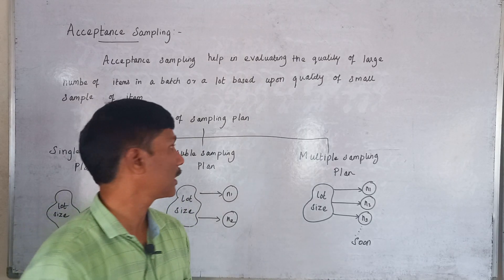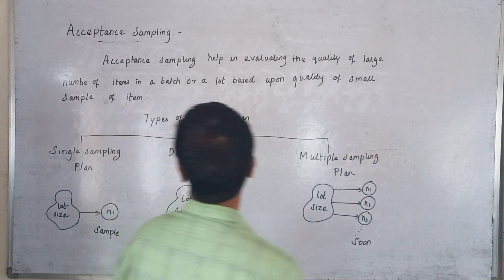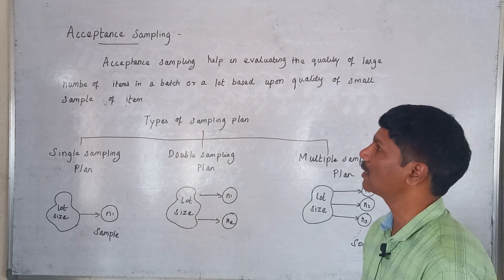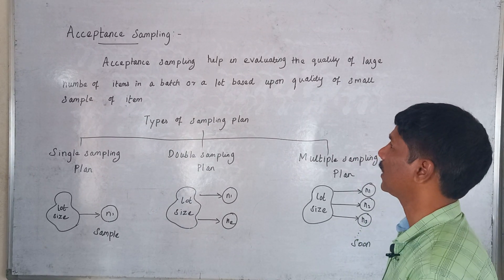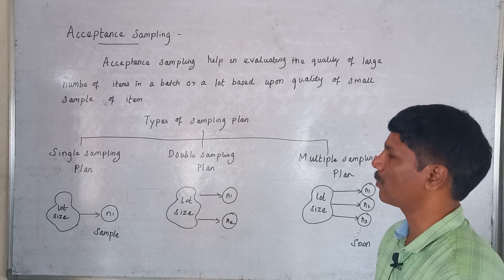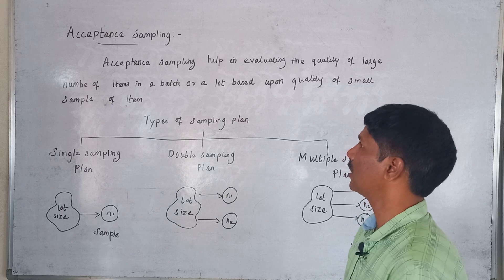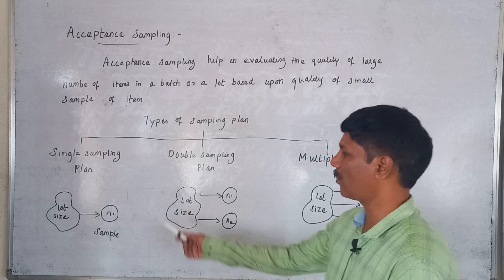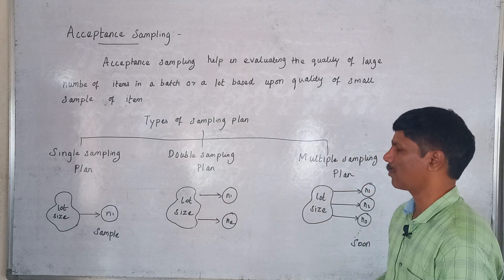Acceptance sampling is used for mass protection. It helps in evaluating the quality of a large number of items — a batch or lot — based upon the quality of a small sample. Types of acceptance sampling plans include: single sampling plan, double sampling plan, and multiple sampling plan.